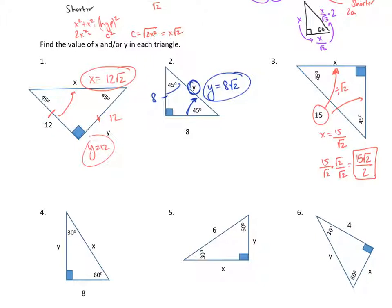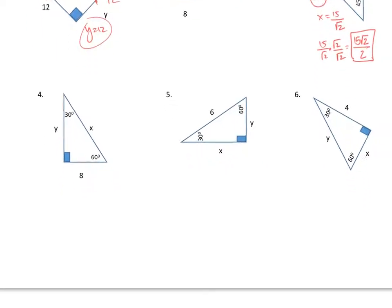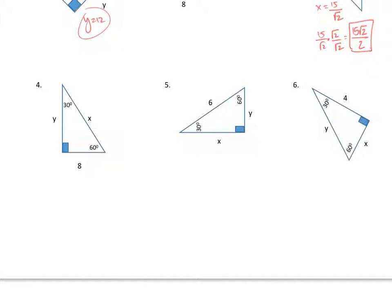On number 4, we have 8 at the 60-degree angle, making it the shorter leg. Moving to the hypotenuse, I multiply by 2, so x equals 8 times 2, which is 16. Going to the longer leg, I multiply by root 3, so y equals 8 times the square root of 3.